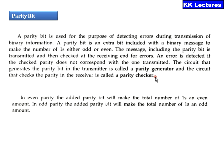When I want to transmit data, the data is encoded and transmitted. At the receiving end, we cross-verify whether we have received a proper parity bit or not. In even parity, the added parity bit will make the total number of ones an even amount. In odd parity, the added parity bit will make the total number of ones an odd amount. So this is the one bit we are adding to the data to make the total number of ones either even or odd.